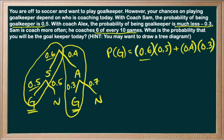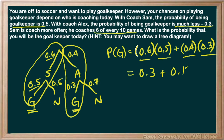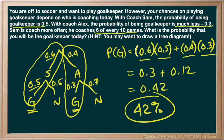Coach Sam has a 60% chance of being the coach, and then he chooses us as goalkeeper. The other scenario: coach Alex ends up being the coach and he chooses us to be goalkeeper. So we have everything laid out. 0.6 times 0.5 equals 0.3, and 0.4 times 0.3 equals 0.12. Adding those together gives 0.42. So there is a 42% chance that we would end up being the goalkeeper.